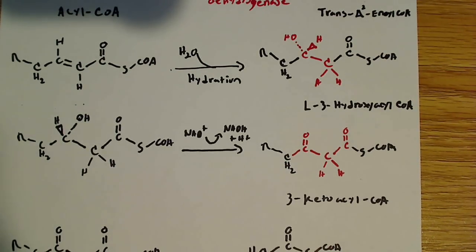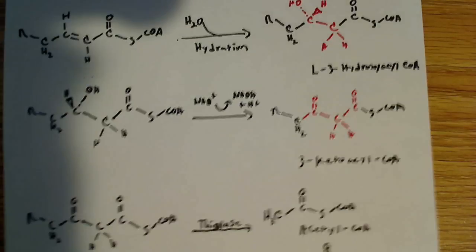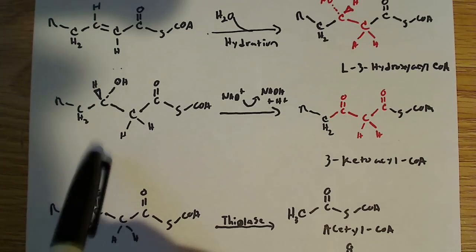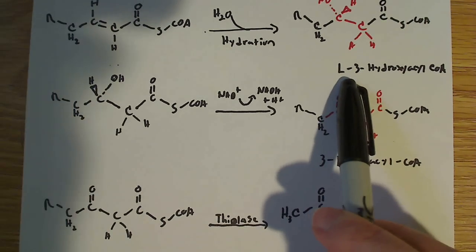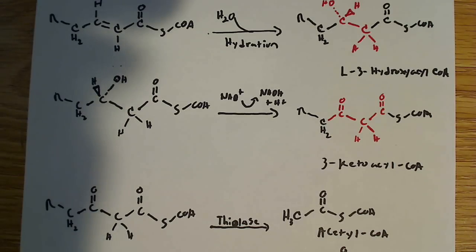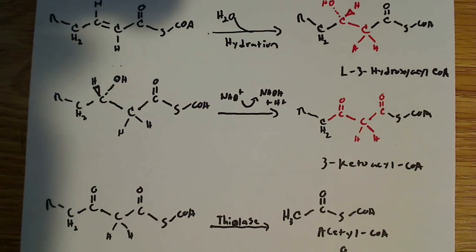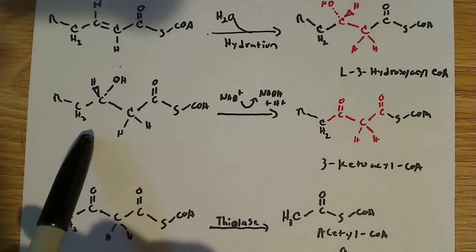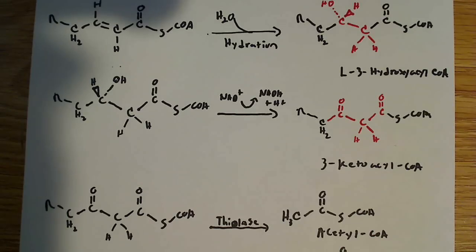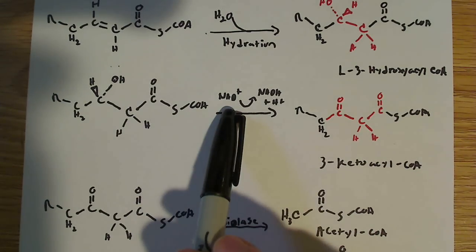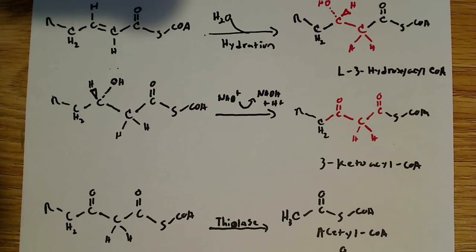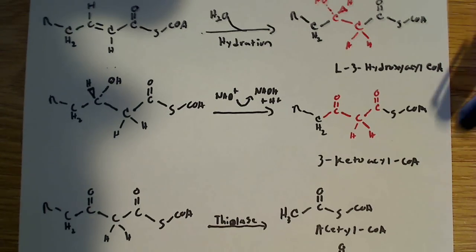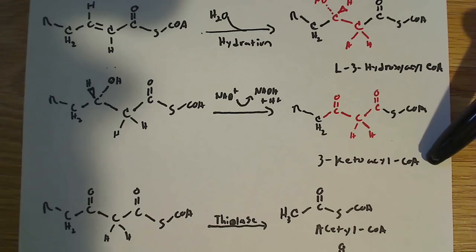So the next reaction that's going to happen is we're going to take that same molecule, which the name is over here, it's not all that important, but it's L-3-hydroxyacyl-CoA. So here we are again with L-3-hydroxyacyl-CoA, and we're going to reduce another molecule here. This time it will be NAD+. NAD+ is reduced to NADH plus H+, and that's going to form this molecule over here, 3-ketoacyl-CoA. And that's because we're going to have a ketone here now.